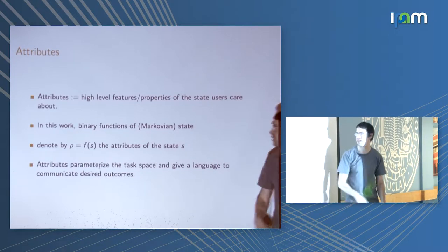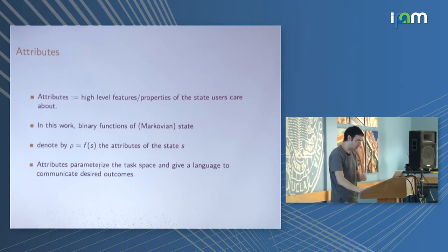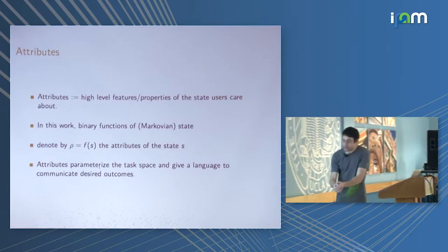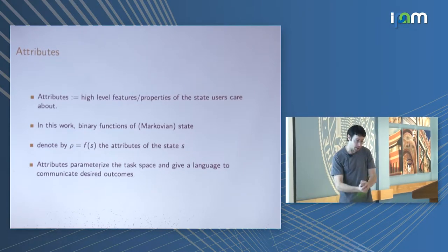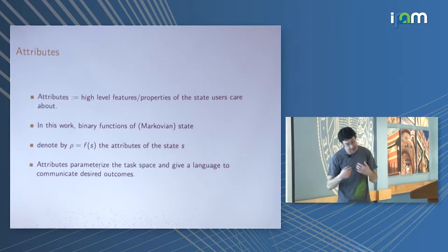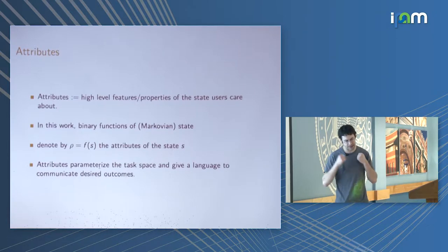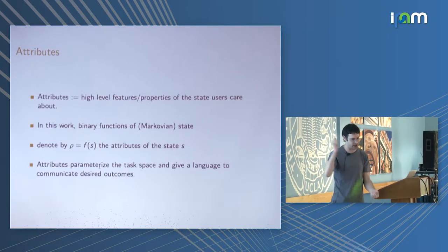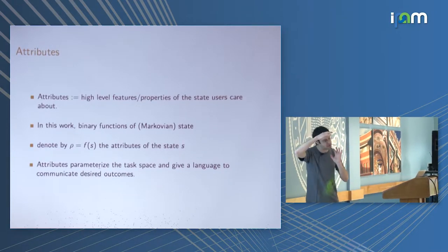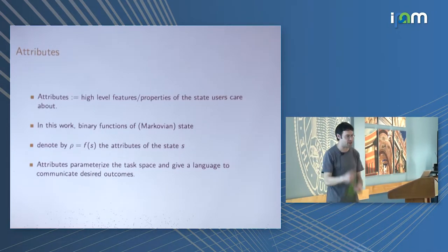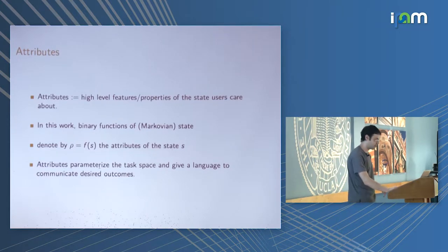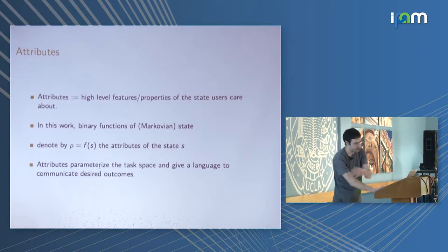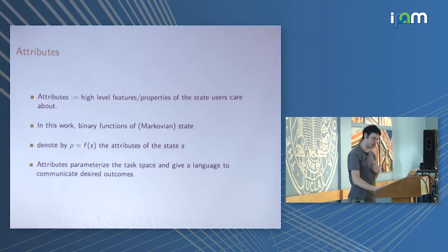It's incumbent on us to give properties that make sense. The point of these binary attributes of state is to parameterize the task space — to tell the agent what we're interested in. I'm being very abstract; I'll be more concrete in a slide or two.